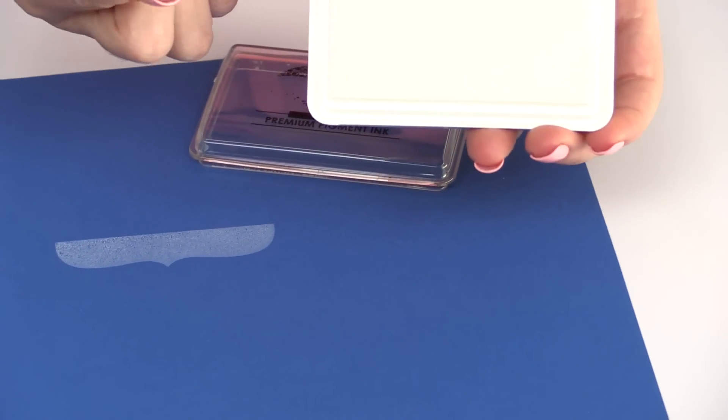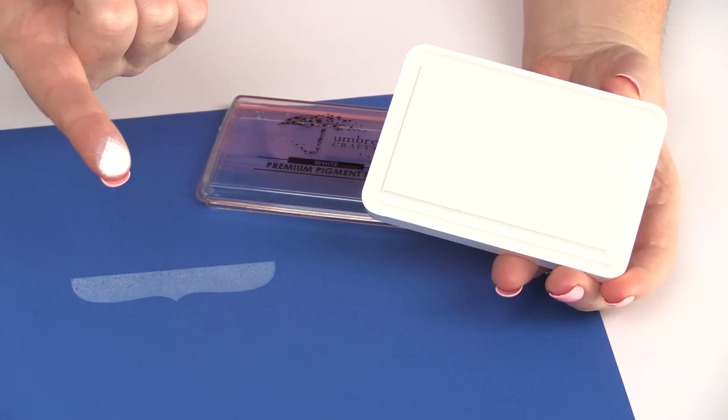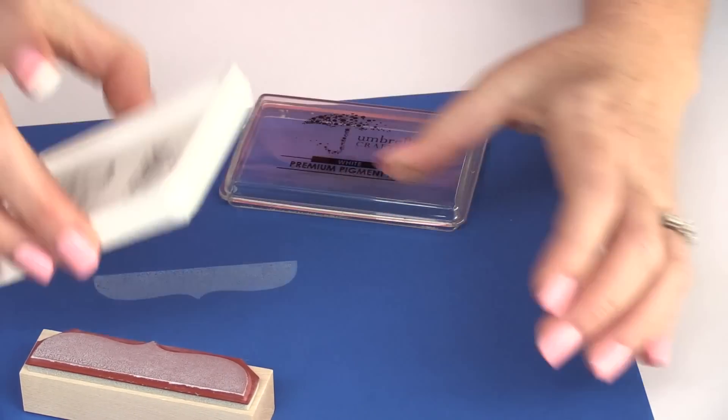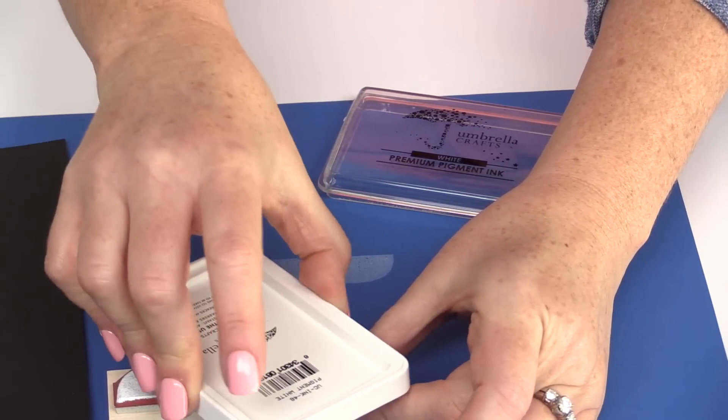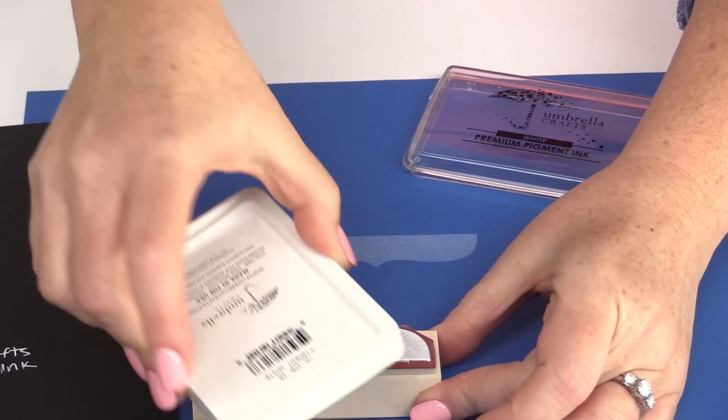The pad is more like a foam pad and the ink sits right on top of your finger. So when you ink with that, we're going to do the same thing—really cover our stamp with the pigment ink.